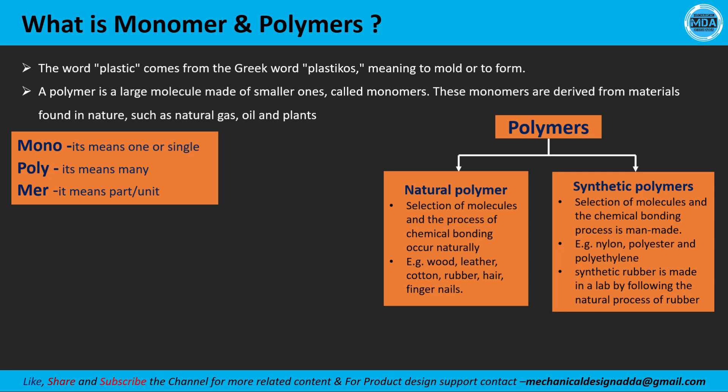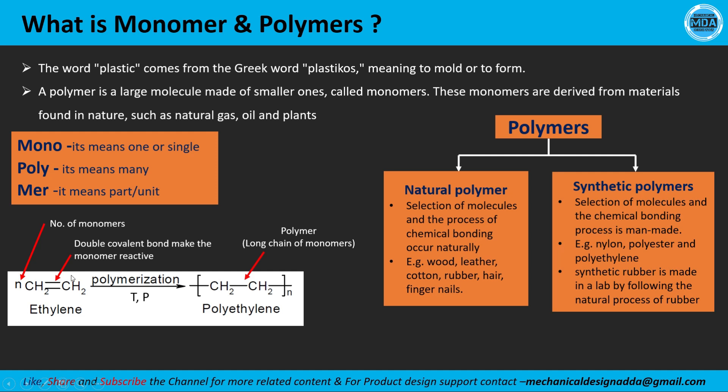These man-made polymers we produce in the lab include nylon, polyester, and polyethylene, among many others. In general terms, we call synthetic polymers 'plastic.' So all plastics are synthetic polymers. Rubber falls under natural polymers — we get rubber naturally — but we can also produce synthetic rubber in the lab by following the natural process.